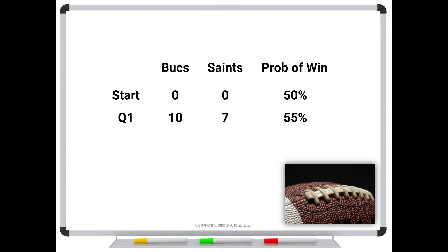Now let's look at a different scenario. Instead of 10-7 at the end of the first quarter, what if it's 24-7? That gives you even more confidence — maybe you take it from 50% to 70%. As the lead gets bigger for any given amount of time on the clock, your chances of winning improve, increasing your assessments. In the world of options, that's increasing your deltas — the same as your option going deeper and deeper in the money.